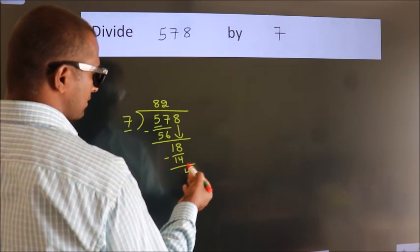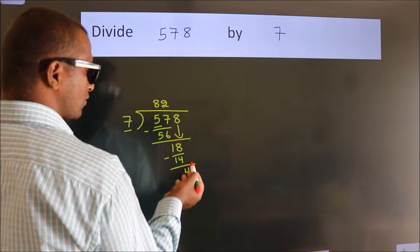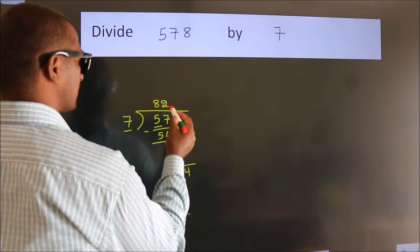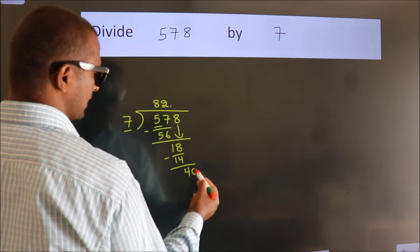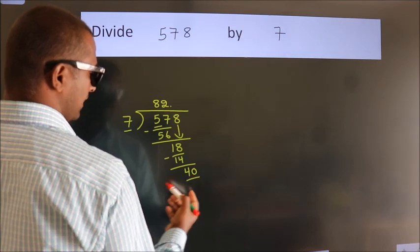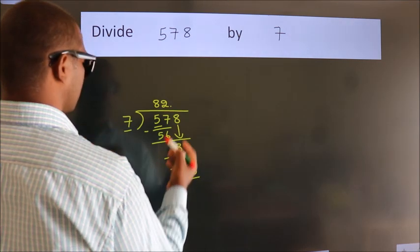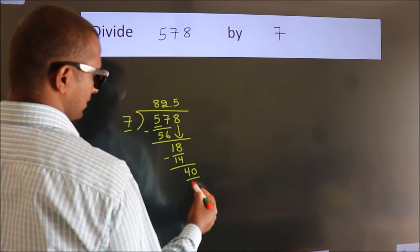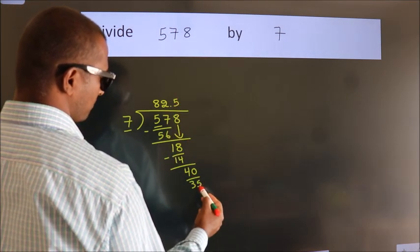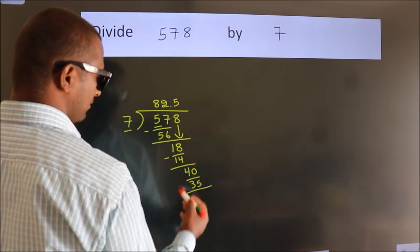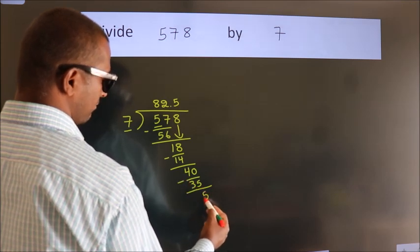After this, there are no more numbers to bring down. So what we do is put a dot and take 0, making 40. A number close to 40 in the 7 table is 7 times 5, which is 35. Now we subtract and get 5.